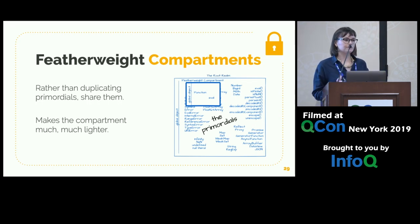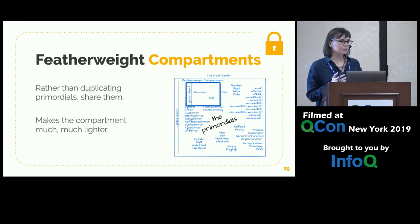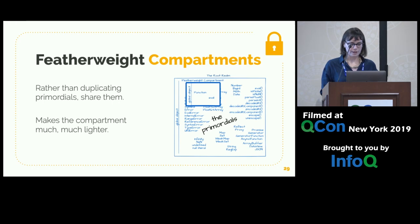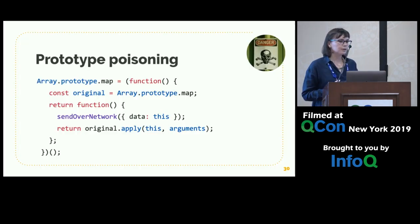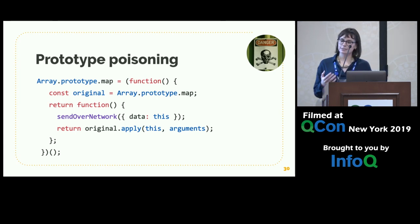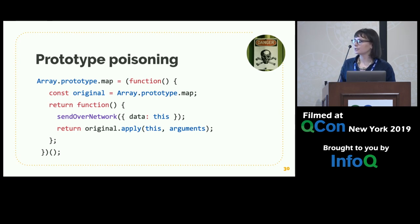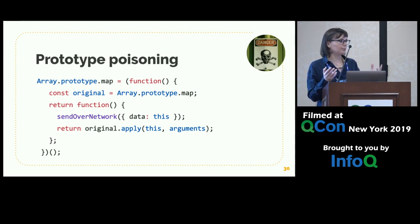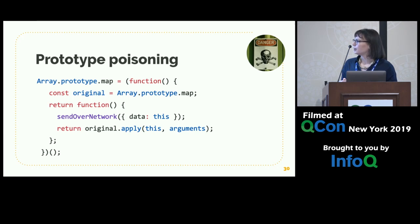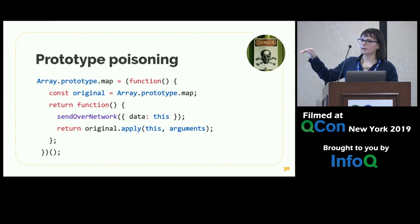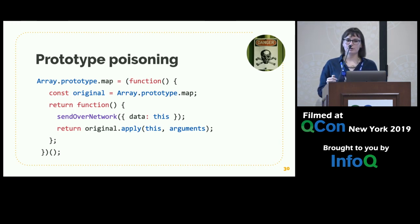We have these featherweight compartments and we're sharing these primordials. But we still have a problem because of prototype poisoning. What prototype poisoning does is it resets the primordials — the objects we get at startup — and sets them to other values. An attacker takes array.prototype.map and sets it to something else while saving the original functionality. From the user's perspective everything looks fine — array map still works. But in the background, it's sending all of the data in the array over the network.